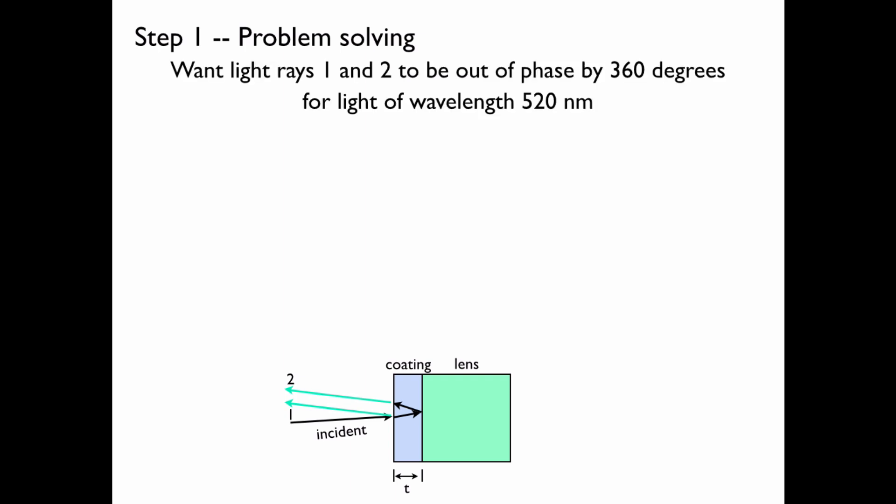And in order for this to occur, the light rays drawn in the diagram below, one which just reflects off the coating, and two which goes into the coating and reflects off the lens, must be out of phase by 360 degrees. That is totally out of phase. It could be out of phase by 720 degrees or some higher multiple of 360, but we're just looking for the minimum thickness that the coating could have. So therefore, we only want them to be out of phase by 360 degrees.